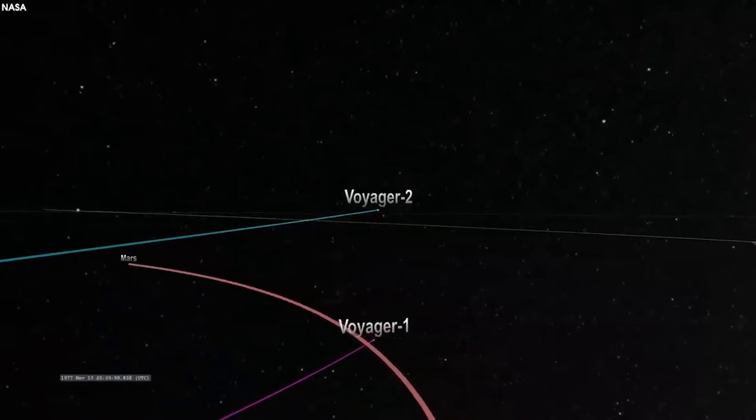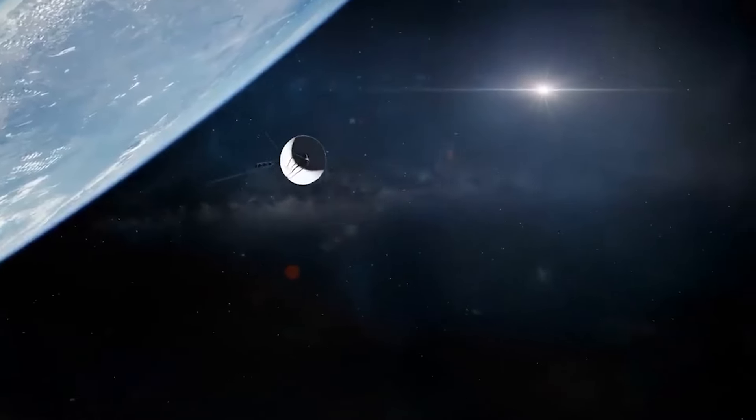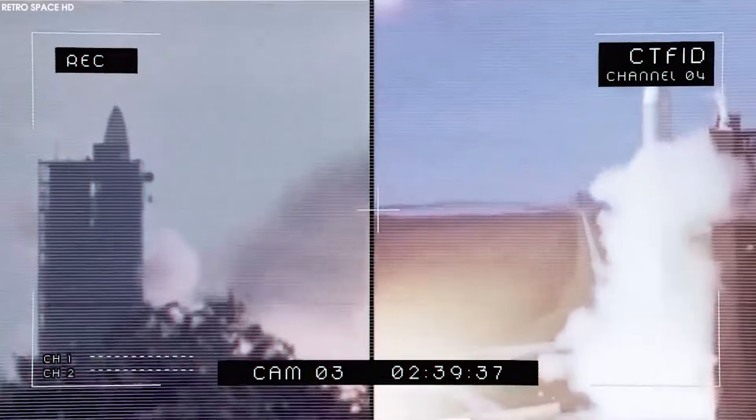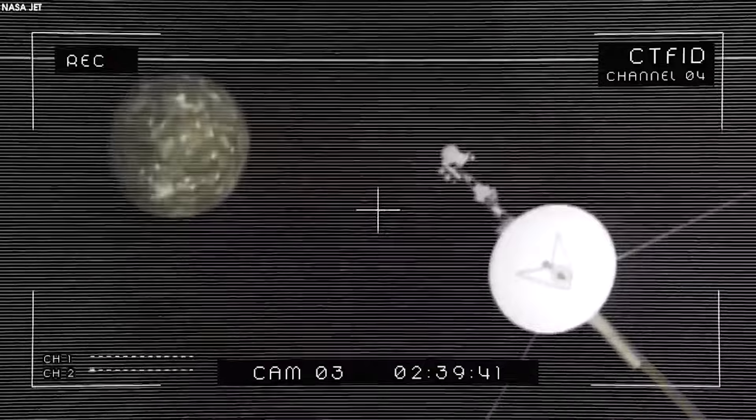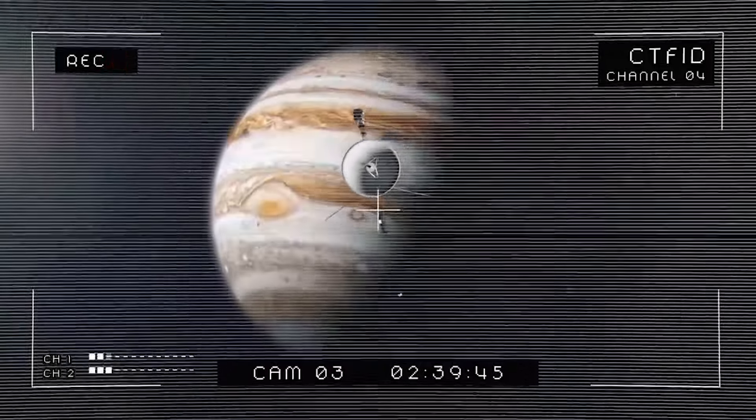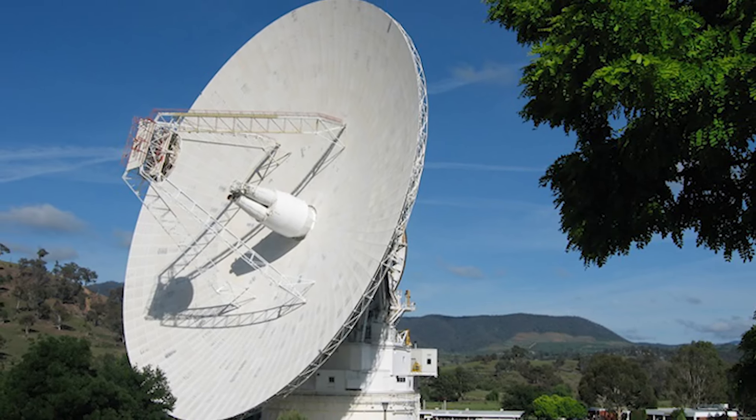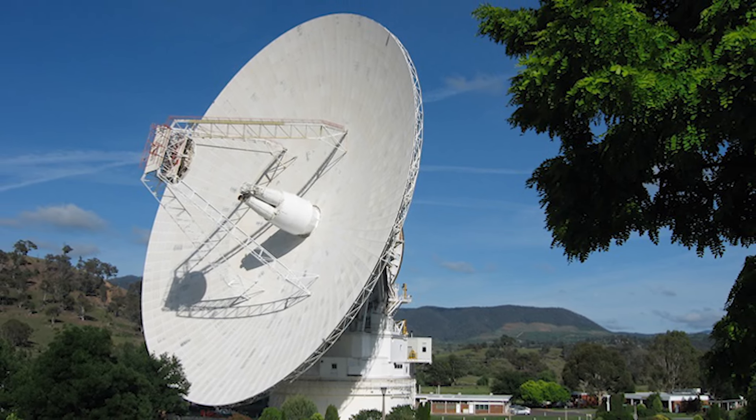When it comes time to send up more commands to try to save Voyager 1, operators at Jet Propulsion Laboratory will have to wait more than 45 hours to get a response. The spacecraft's vast distance and position in the southern sky require NASA to use the largest 70-meter antenna at a deep space network tracking site in Australia, one of the network's most in-demand antennas.